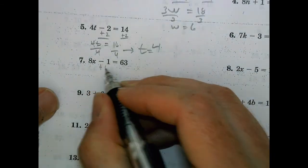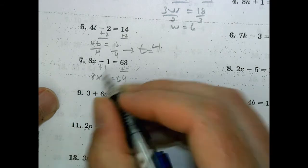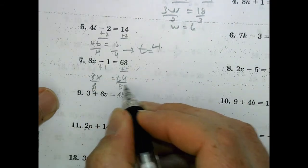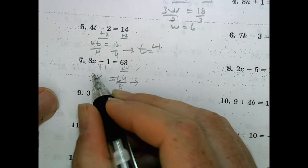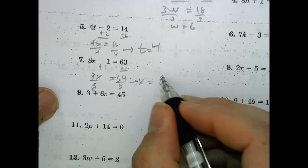Number 7. Let's add 1, add 1. We have 64 over here equals 8x. I'm going to divide by 8, divide by 8. So 8 divided by 8 is 1. X is going to be equal to 64 divided by 8 is 8.